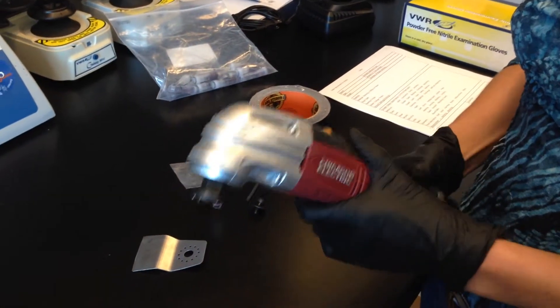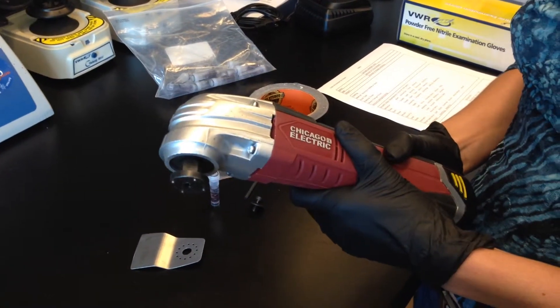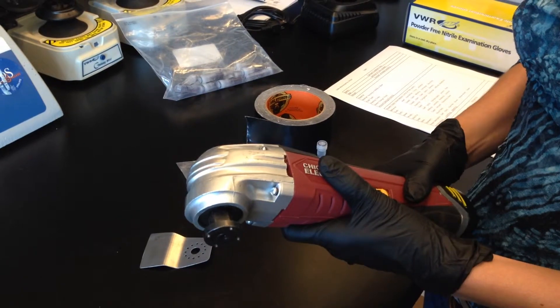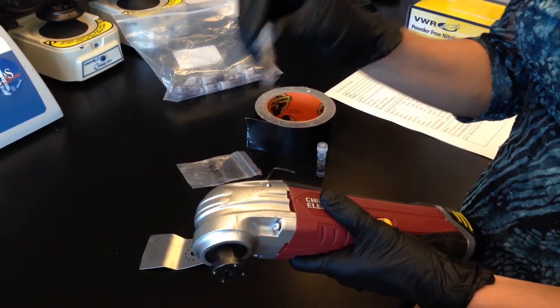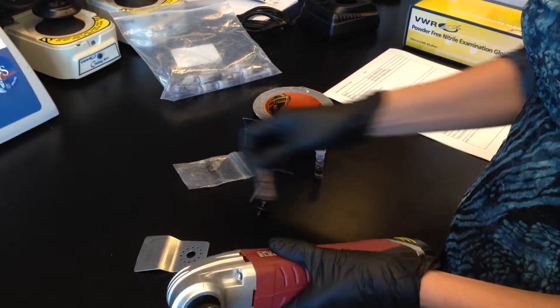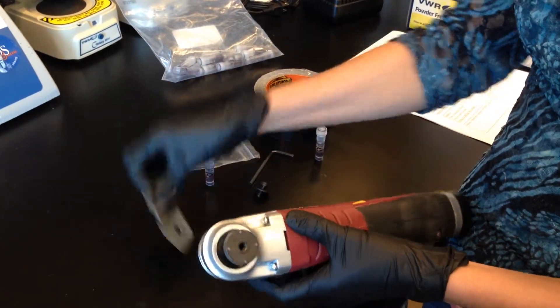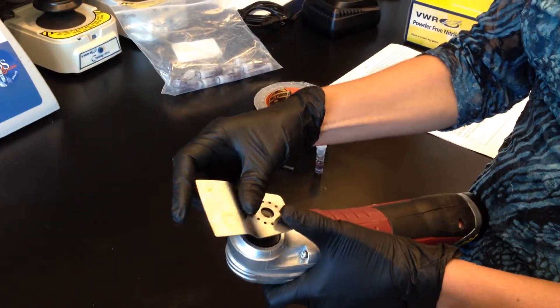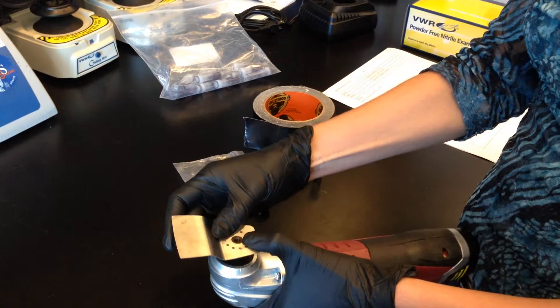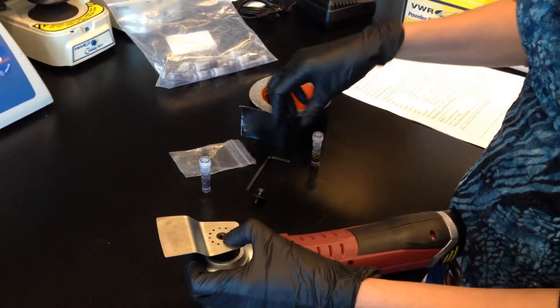I'm going to show you how to use this handheld oscillatory tool to bead beat a MoBio Powerbead tube. First, you attach this metal scraper tool to the oscillatory tool.